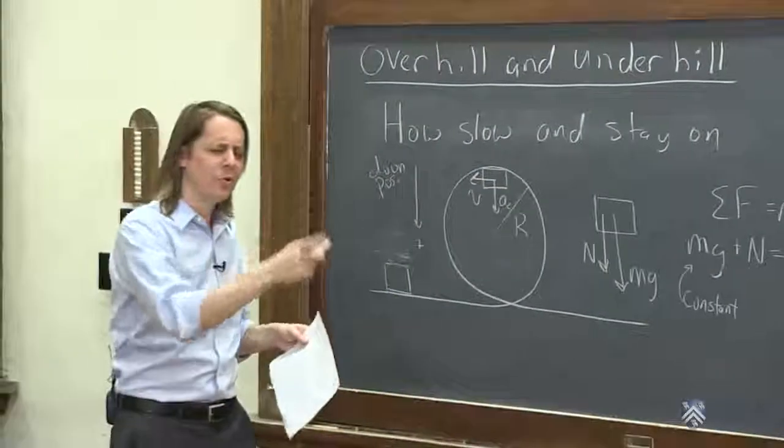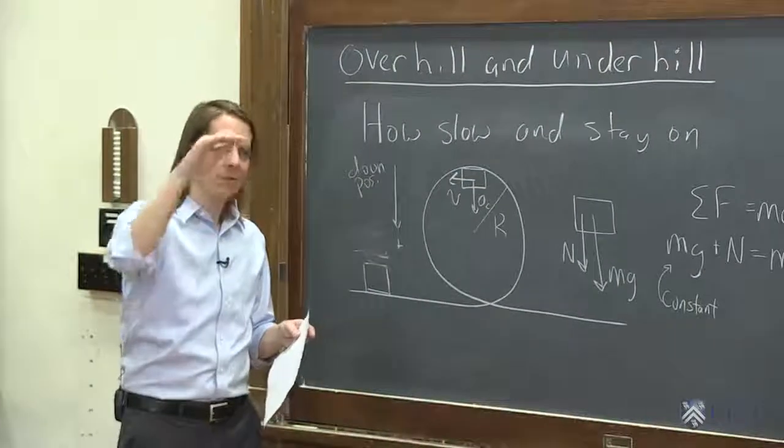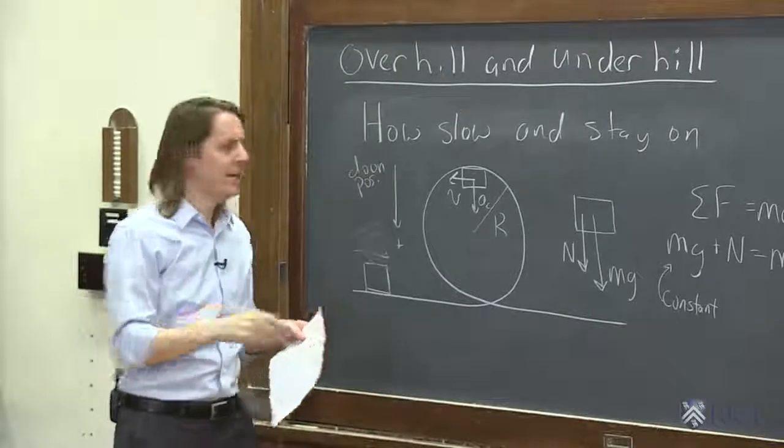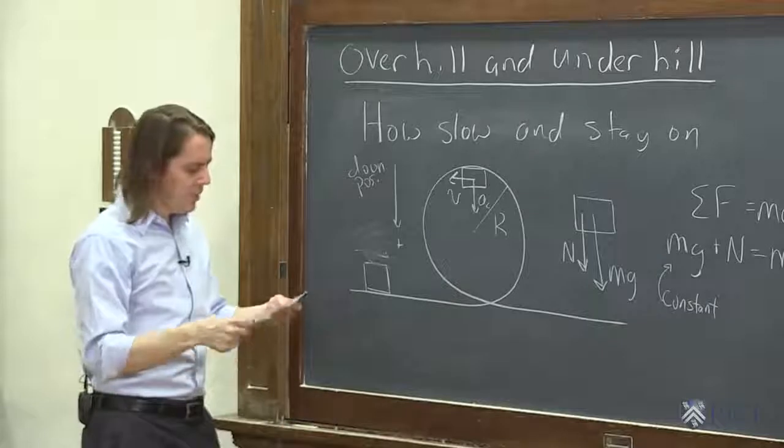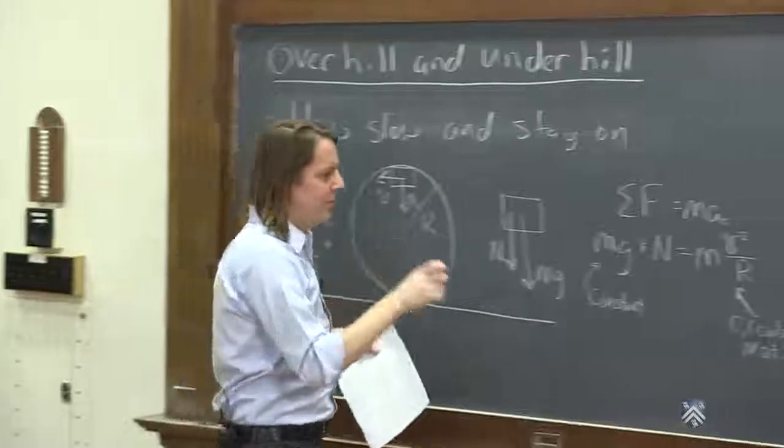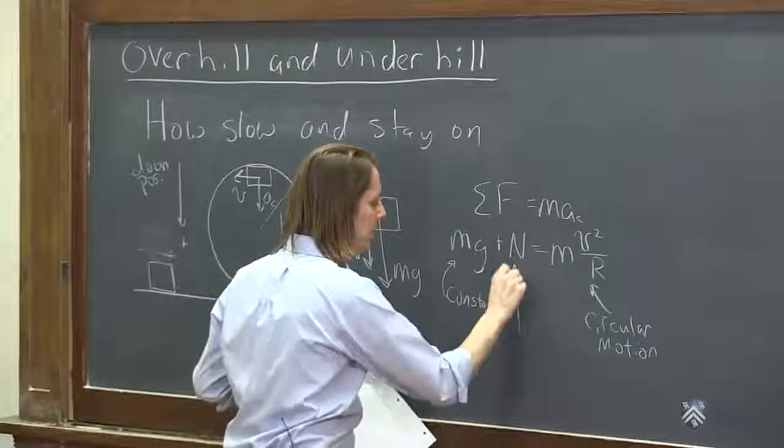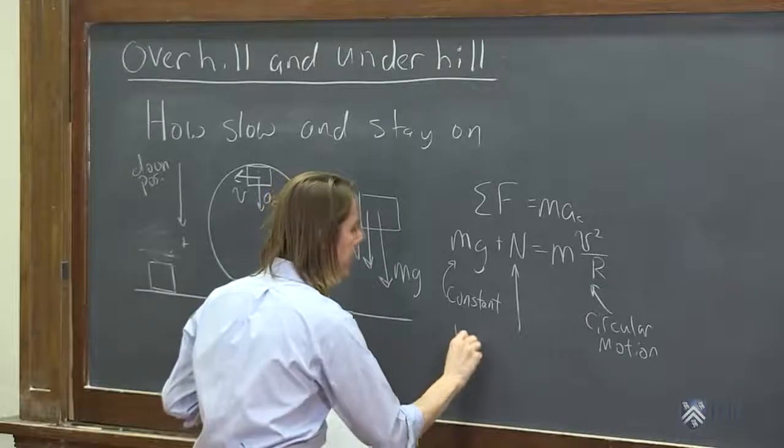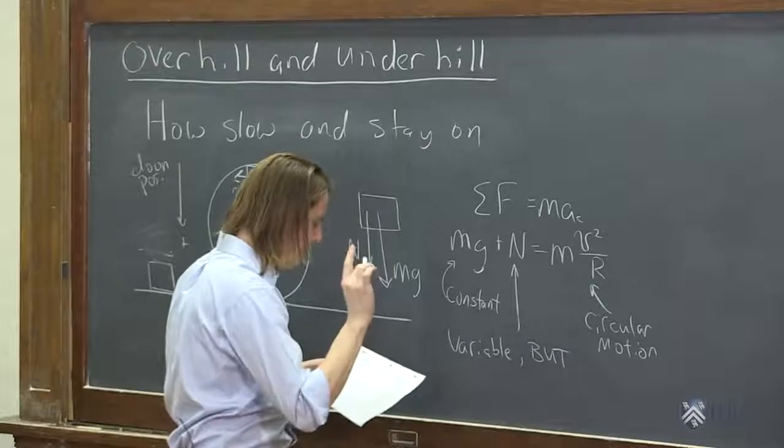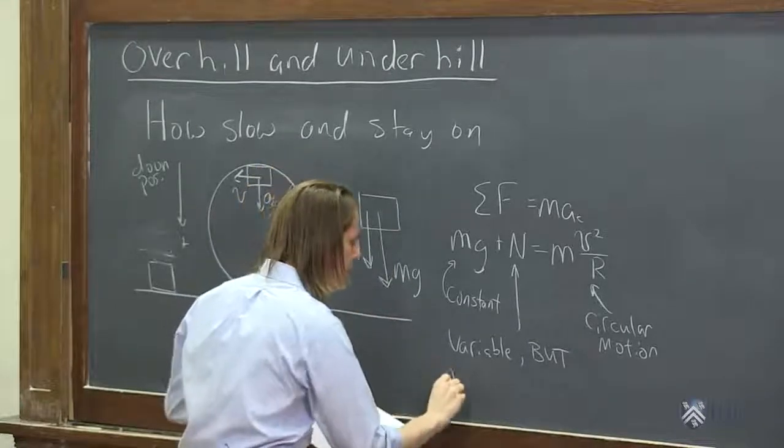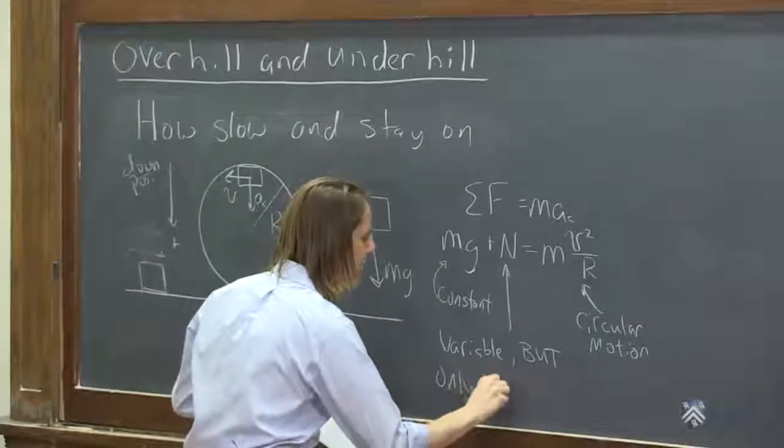And we know that it does. If you go slowly around the track, the track barely had to push you around. If you go faster on the track, the track has to push really hard. So what you want to think about is that the normal force is variable, but this is the big part.